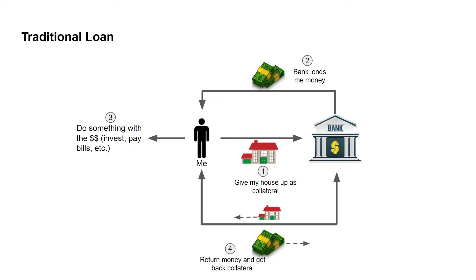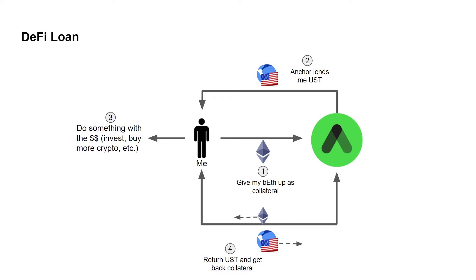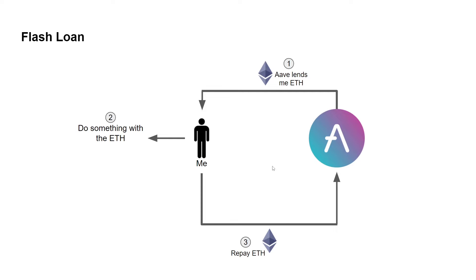That's how a collateralized loan works in traditional finance — it takes a lot of paperwork and friction. There are many examples in DeFi of over-collateralized loans too; for instance, giving ETH as collateral to Anchor, borrowing UST, doing something with it, then paying back the UST with interest. For a flash loan, I don't need any collateral — I go to Aave, borrow some ETH, do something with it, and repay it all in one transaction within seconds.